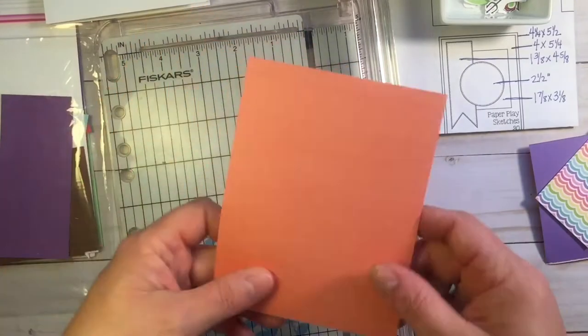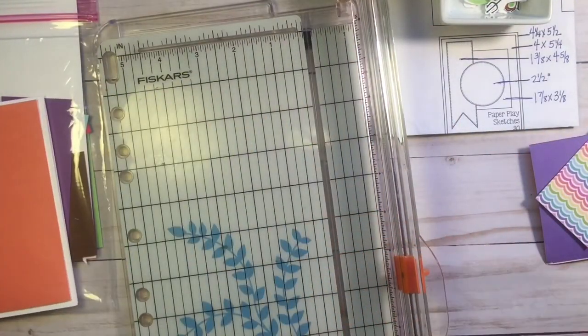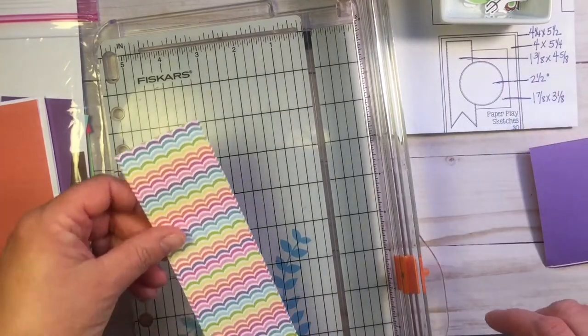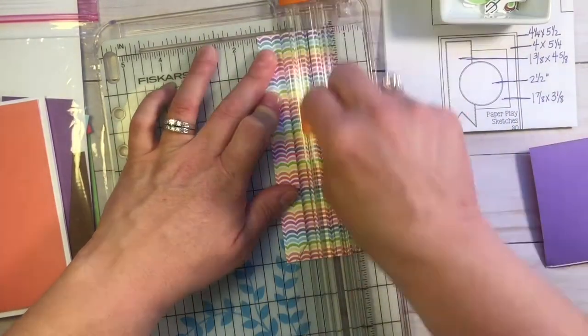So, here is my main panel, 4 by 5¼, and then I'm going to do my flag, and that is 1⅜ by 4⅝.